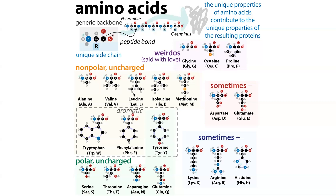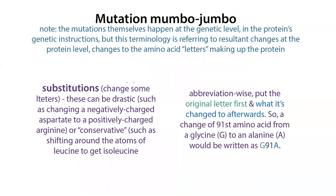A lot of the one-letter codes are self-explanatory — for example, leucine would be L. Some of them are a little weirder, like glycine being a K, so you just have to remember those special exceptions. One other shorthand you might see is referring to a residue by its position and letter. So if we had an alanine in the 91st position, we would call that A91. And if that alanine was changed from a glycine, we could call that G91A. That's one of the ways we refer to these amino acid residues.